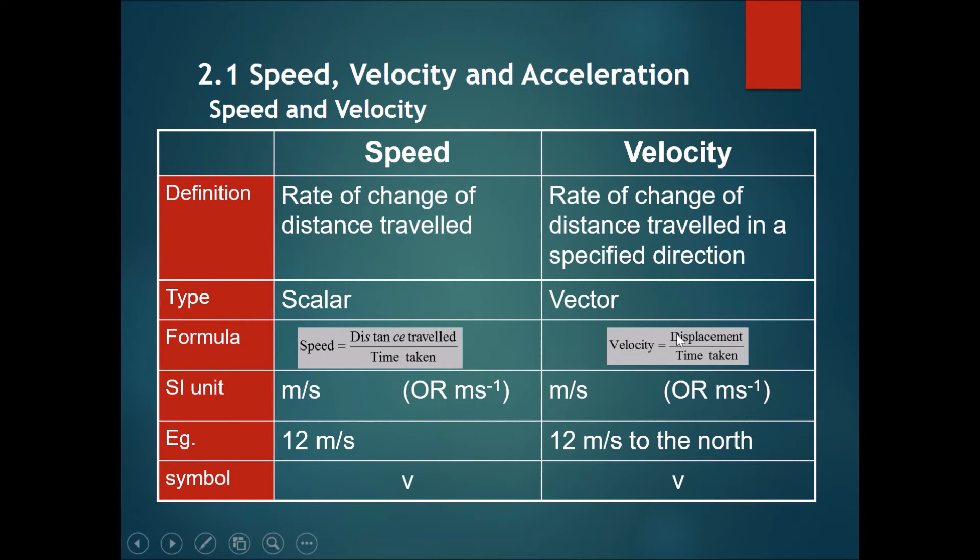The SI units are the same, but the way they are described is slightly different. Speed will be like 12 meters per second, but velocity will be 12 meters per second to the north—it has both magnitude and direction. The symbols both use v, and now we come to another comparison.